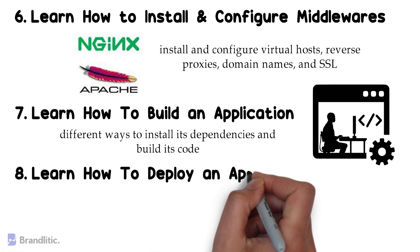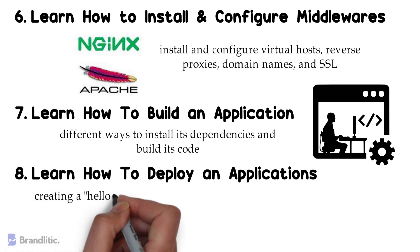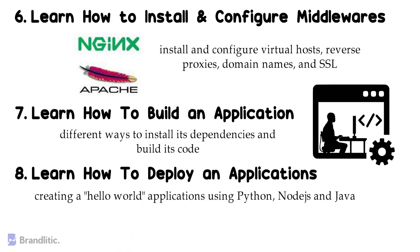Step 8: Learn how to deploy an application. You'll need to know how to deploy apps in a production server once you've learned how to install and configure Nginx. You can start by creating Hello World applications using Python, Node.js, and Java, and deploy these three applications on the server. You can also use Nginx as a reverse proxy for all of them.